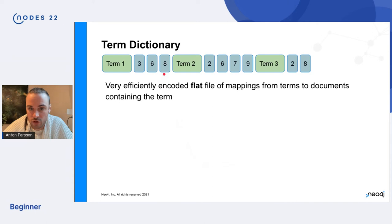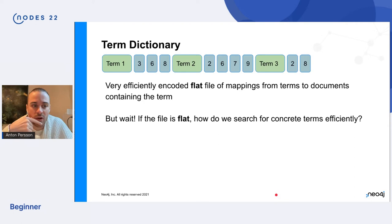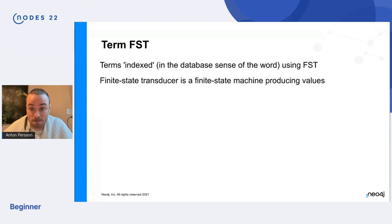Where each term, each unique term is stored once and it points to all of the documents that contain that term. And we see here, for example, that document eight here, it belongs both to term one and to term three. So this document contains both of those terms and it will be stored twice. And this structure is flat. So how can we then search in this index if the structure is completely flat, doesn't that mean that we just need to look at everything? And that's a great question.